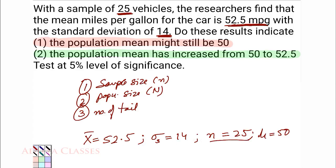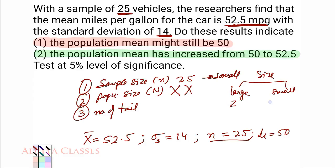Now for the analysis: sample size is 25, which is small. Population size is not mentioned. Recall the decision chart — large sample size goes with Z. Small sample size is further divided: if population variance is known, use Z; if not known, use T. Here the size is small, and we know sample variance, not population variance. So population variance is not known, and we end up with a T-test.